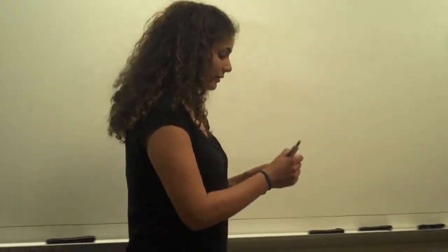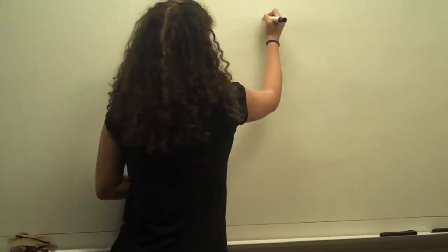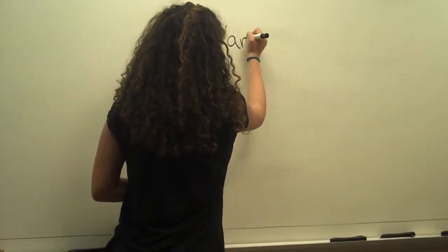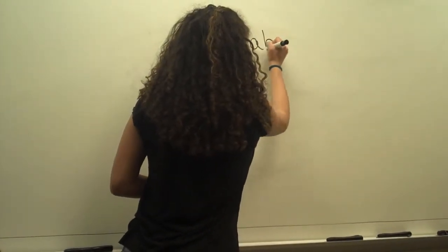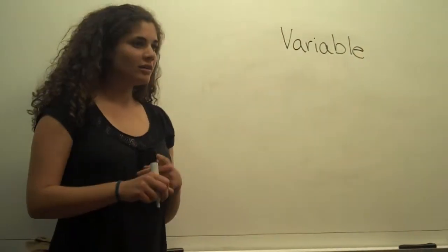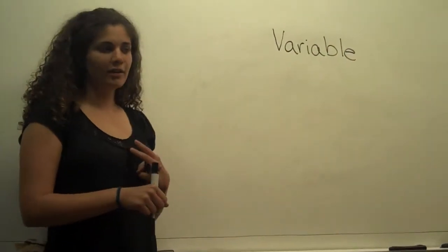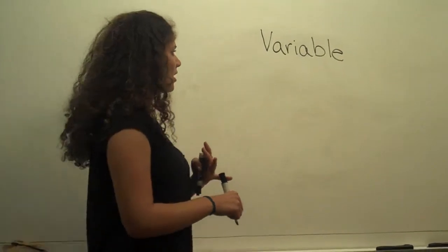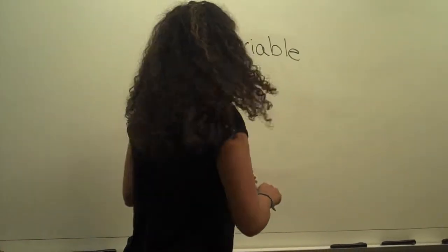So what is a variable? A variable is pretty much anything that you are measuring. So that could mean temperature, time, color, distance, anything that you're observing and measuring is a variable.